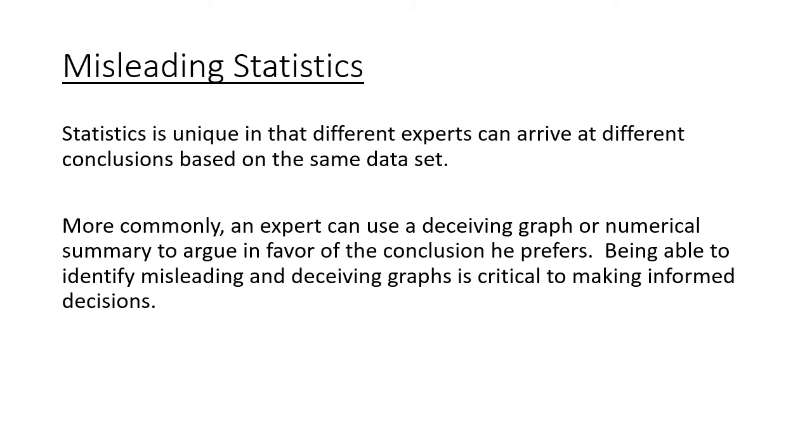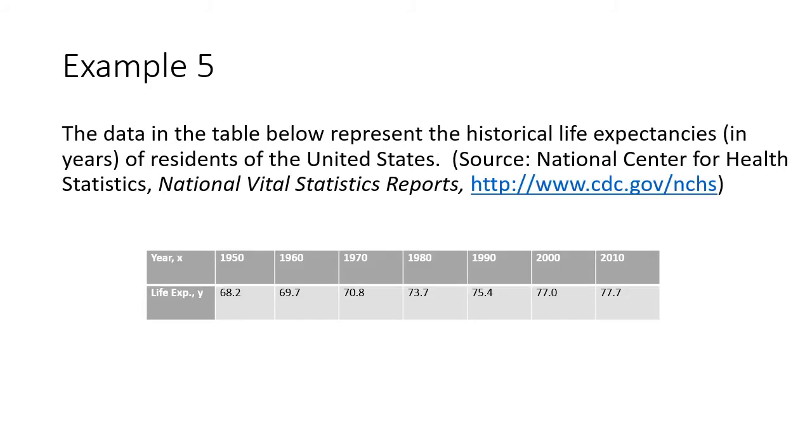Let's take a look at the most common way that people do that. In this example, I took the life expectancies of people in the United States from 1950 to 2010 using the CDC website from our federal government. You can see that in the year 1950, the life expectancy was 68.2 years, and so on. What I'm going to do is make a graph of this data. Although, actually, I'm going to make two different graphs.